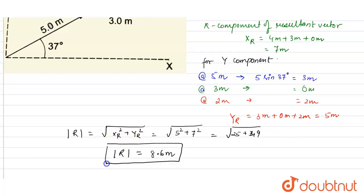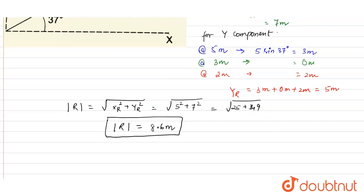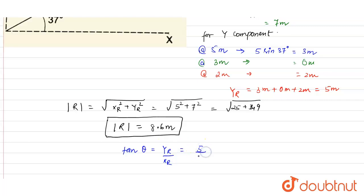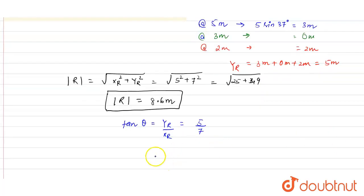Now, talking about the angle the resultant makes with the horizontal: tan θ = Yr / Xr = 5 / 7. From here, the angle θ made by the resultant vector with the horizontal comes out as approximately 35.5°. This is our answer.